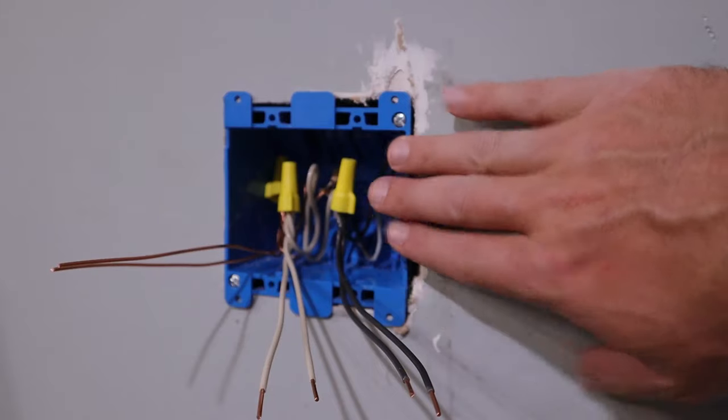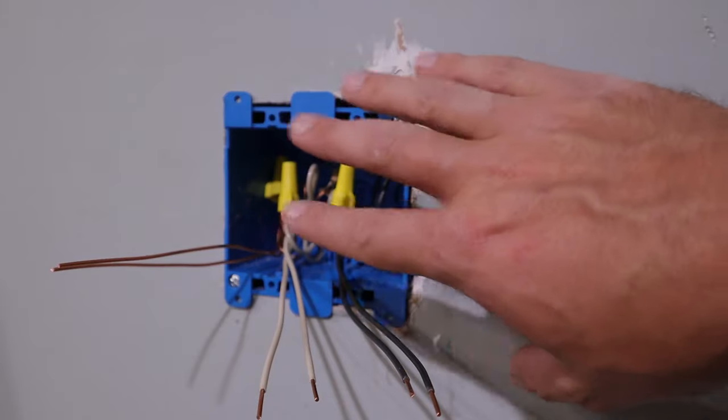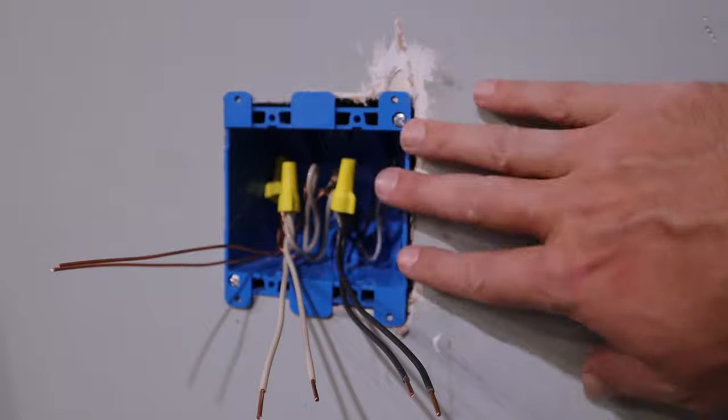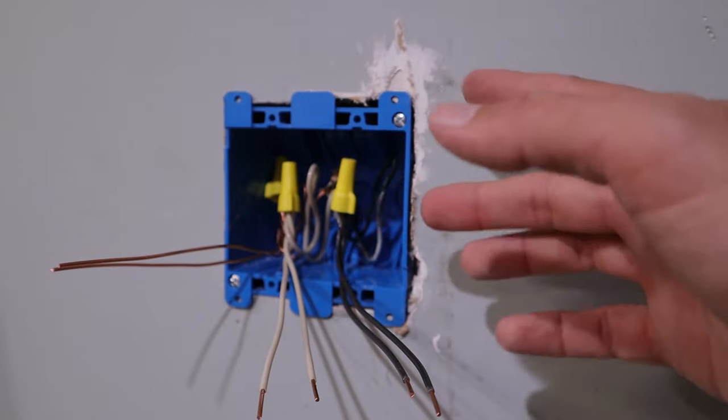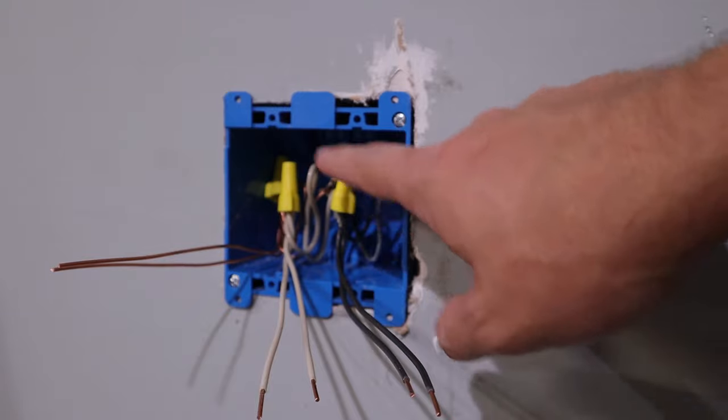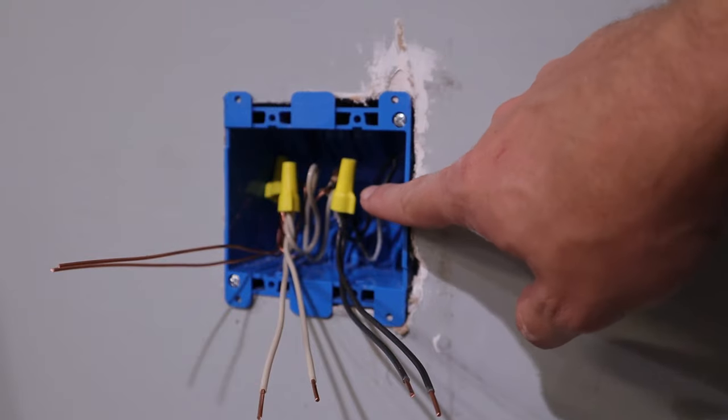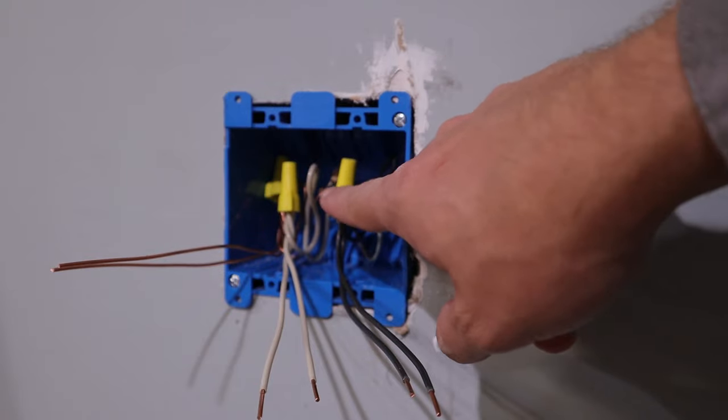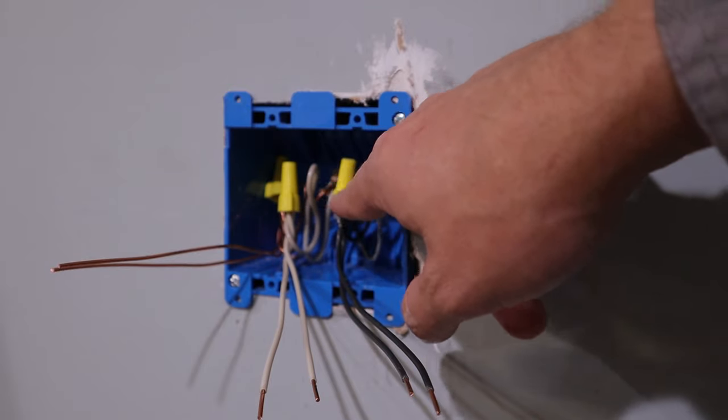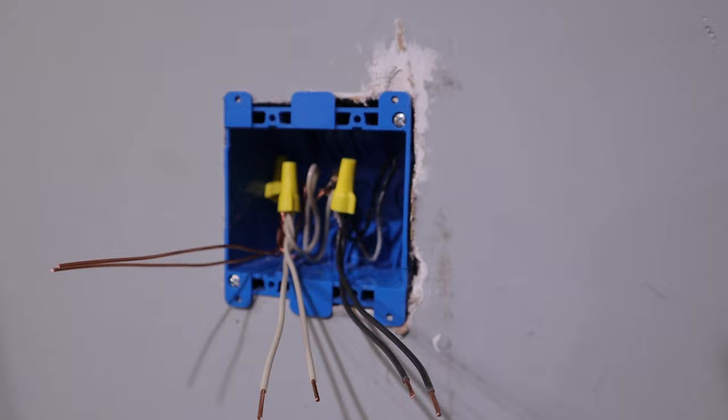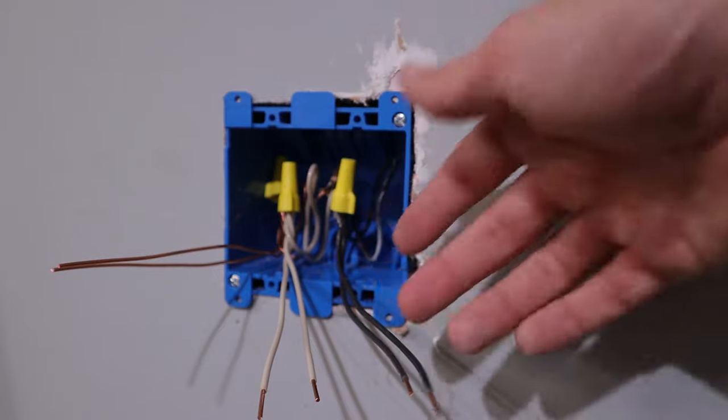Now something to note, this outlet box just so happens to be at the end of the run for the outlets, so there's not going to be any power that's going on to another box. If there was, there would have been an additional wire, the wire that's going on to the next outlets, that we would have also had to have put each color underneath each of the wiring nut. So instead of there being three underneath of each, there would have been four.